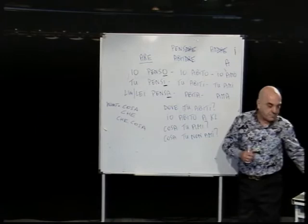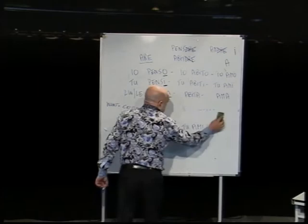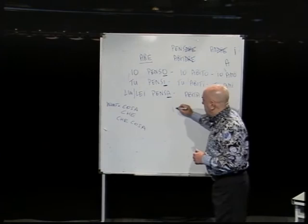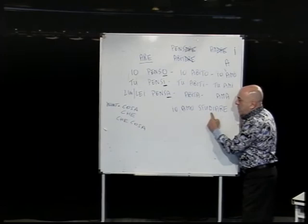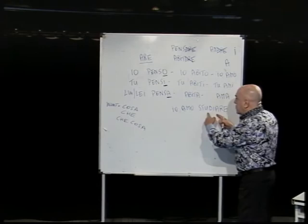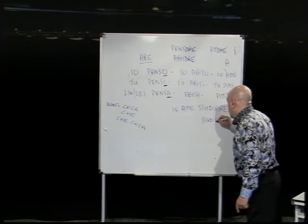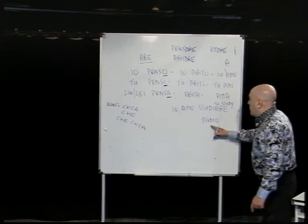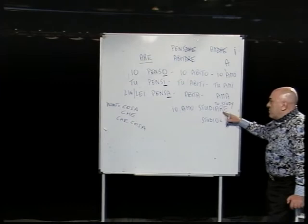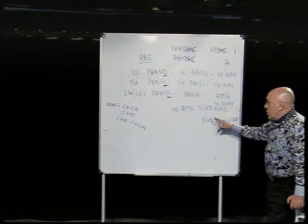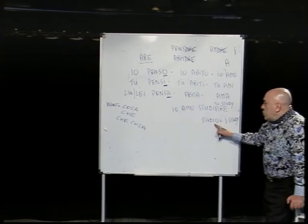I wrote the sentence io amo studiare. Why do I write studiare and not studio? Studiare means 'to study' — it is the full verb form. But studio means 'I study', because from the full verb studiare you remove the -ARE and add the letter O for the subject io. So studiare is the infinitive and studio means only I study — it refers specifically to the subject I.